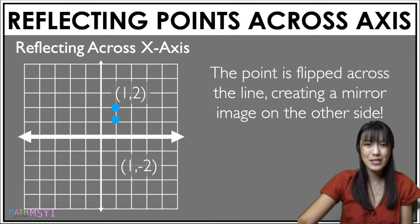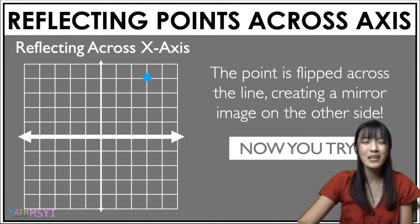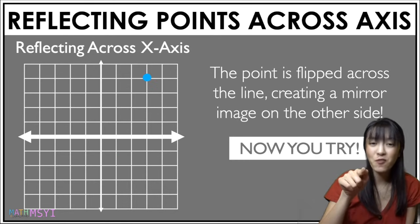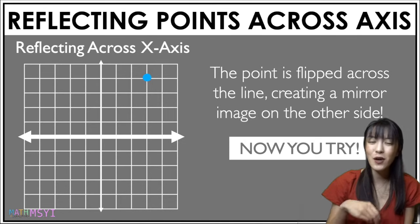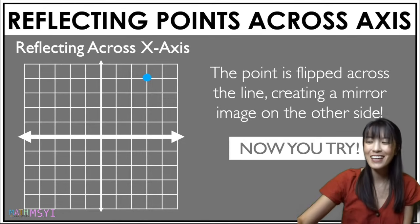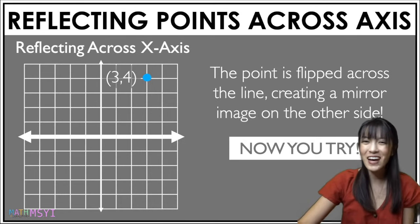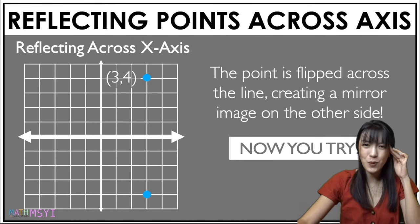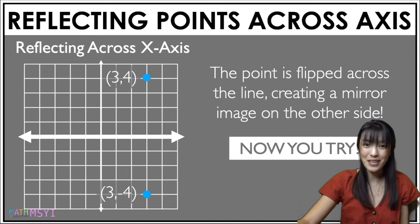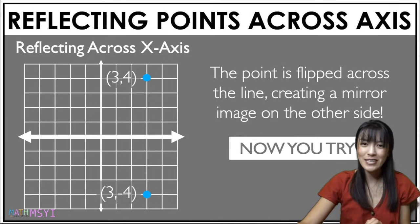Let's do a few examples. I'm going to have you try this one — go ahead and put your finger where you think this point will be. I'll pause it for a bit; once you're ready, play the video again. Let's check your answer. This coordinate point is going to be 3, negative 4, because your x-coordinate stays the same and your y-coordinate becomes the opposite.